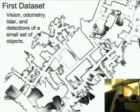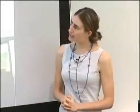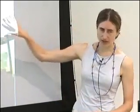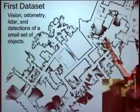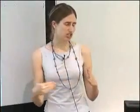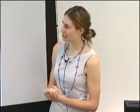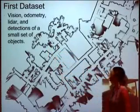Our dataset is the third floor of the Computer Science Building at MIT — an interesting building designed by Frank Gehry, which can be confusing. The map comes from a laser range scanner. It's not particularly rectilinear — there are a lot of open spaces and interesting structures. We also have vision, odometry, LIDAR, and a small set of detections for object classes.